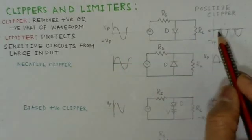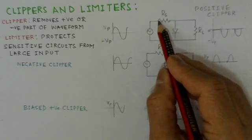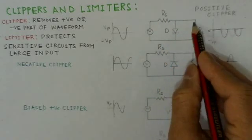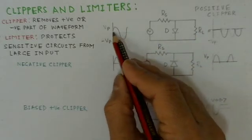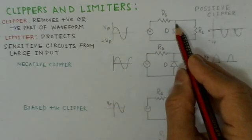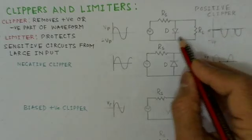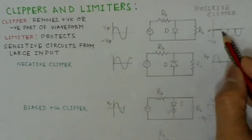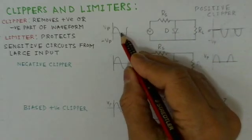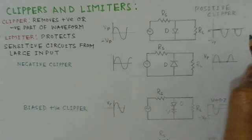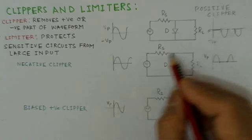The positive clipper circuit consists of a series diode, a limiting resistance R_S for the diode, and a load resistance. Applying a sinusoidal input, during the positive half cycle the diode conducts and the output is zero — the positive peak is clipped. During the negative half cycle, the diode is off and the negative peak appears at the output. This is called a positive clipper since the positive side of the waveform is clipped off.